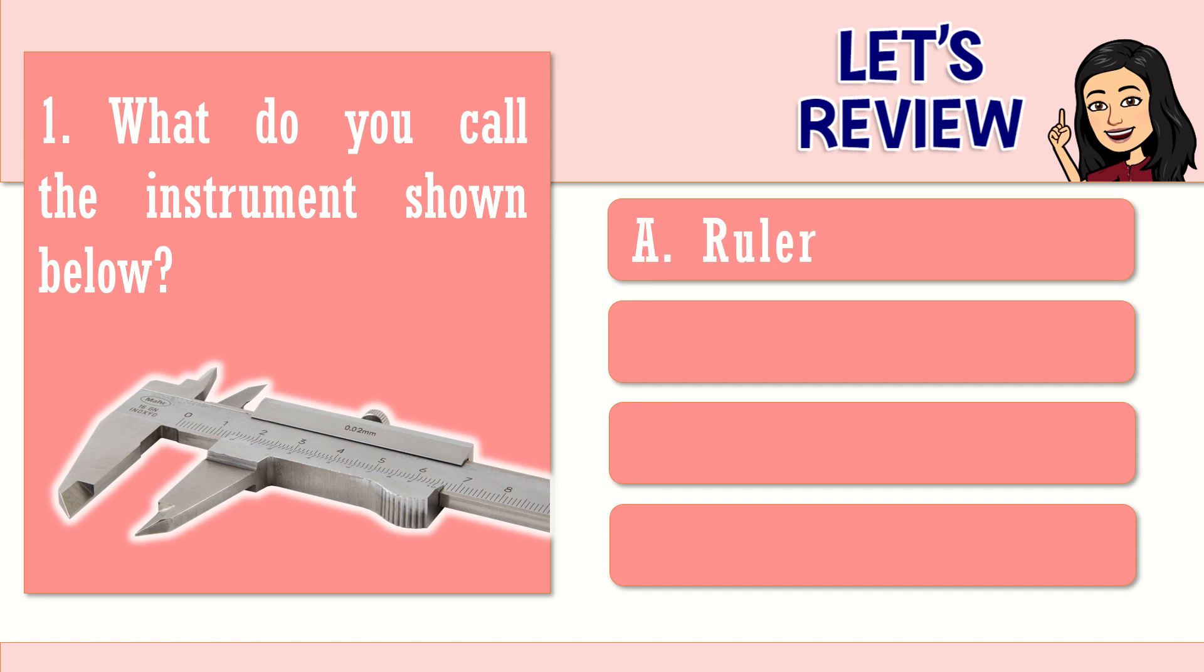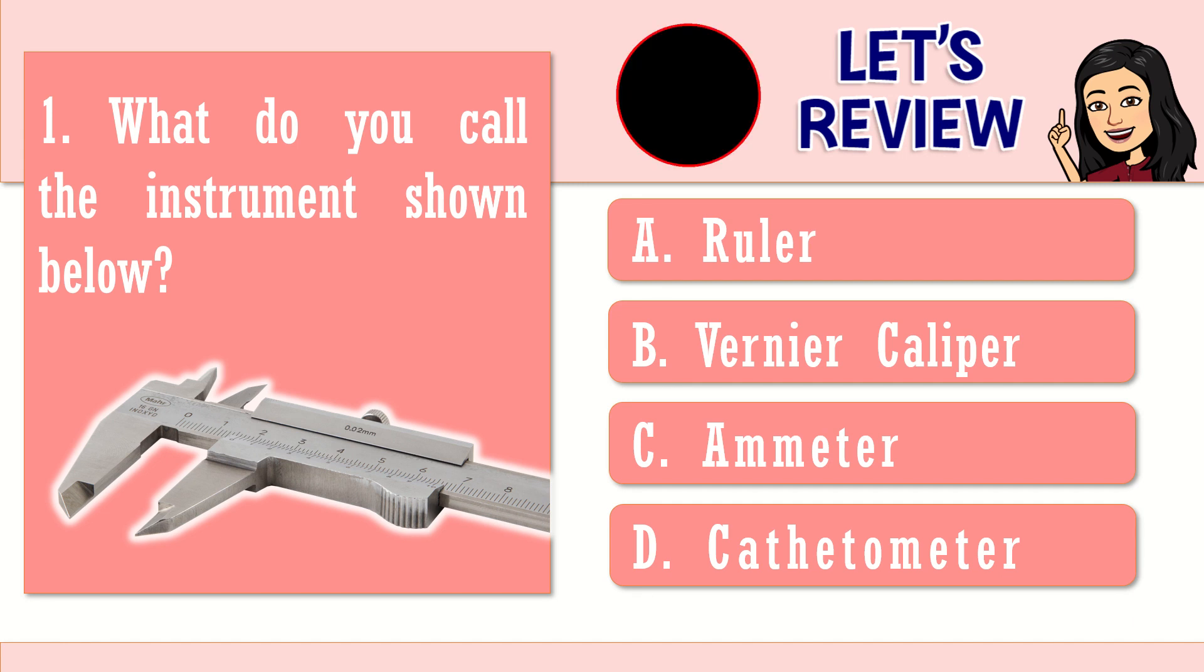Letter A. Ruler. B. Vernier caliper. C. Amateur. Or letter D. Cathethometer. You've got 5 seconds. Time's up. The right answer is letter B. Vernier caliper. Good job. So that is the name of the measuring tool shown on the screen.